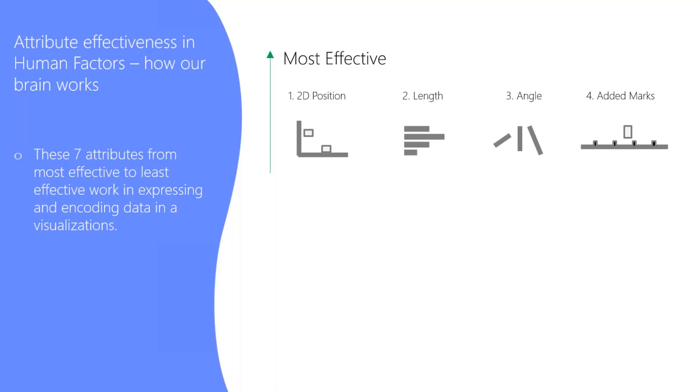So think about the length of a bar or a column chart, the angle, think of a line chart, and then added marks. So is there highlights? Is there markers? Something like that.